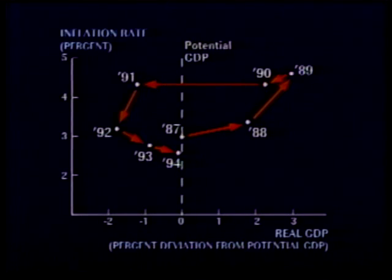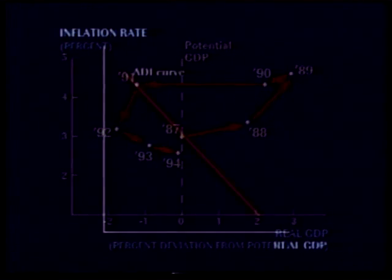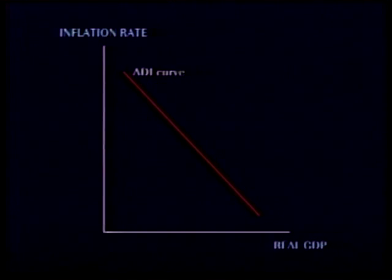You're about to see how an economic model can account for this circular movement. It's based on the behavior of two curves, one called the Aggregate Demand Inflation Curve, or ADI, and the other called the Price Adjustment Line, or PA.